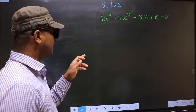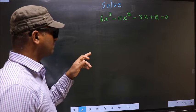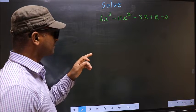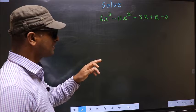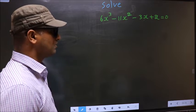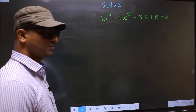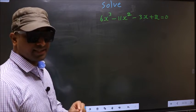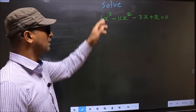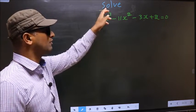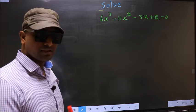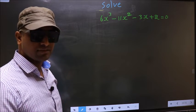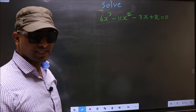Solve 6x cubed minus 11x squared minus 3x plus 2 equal to 0. Here they told us to solve, which means we should find the values of x.